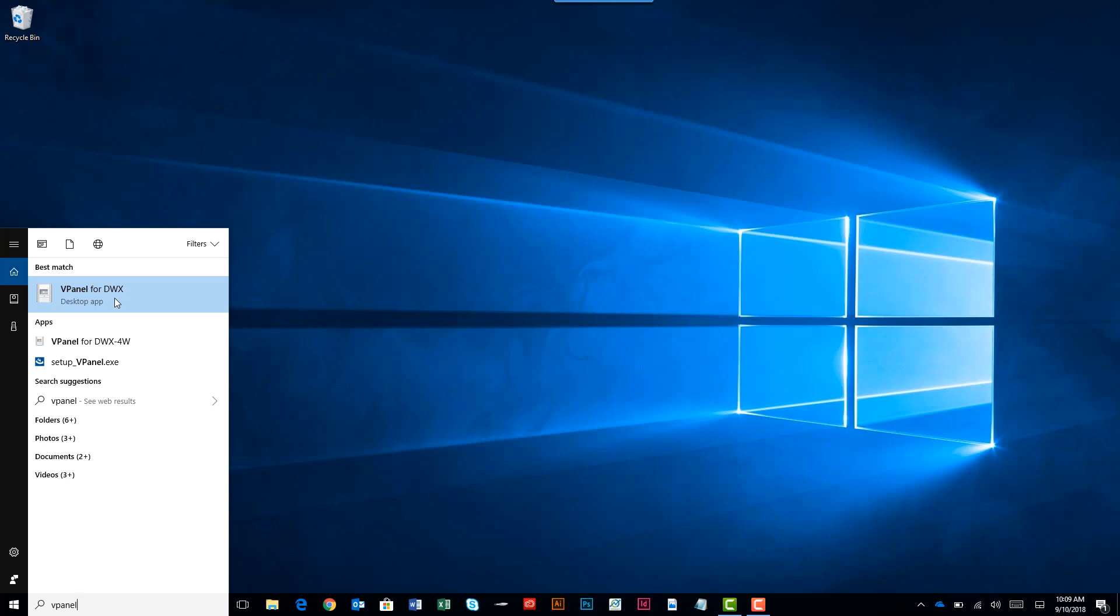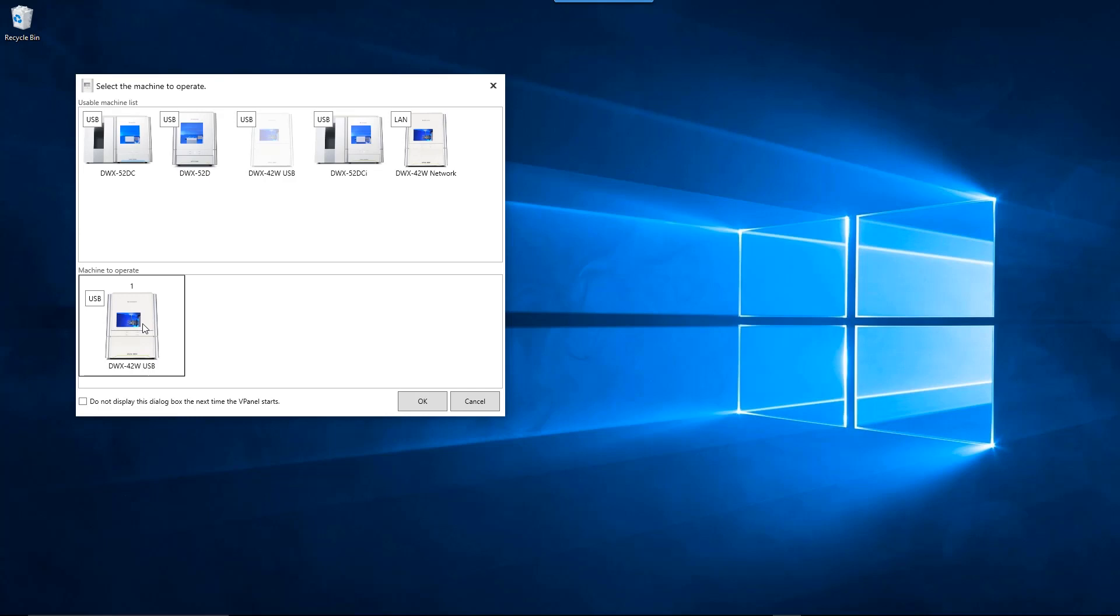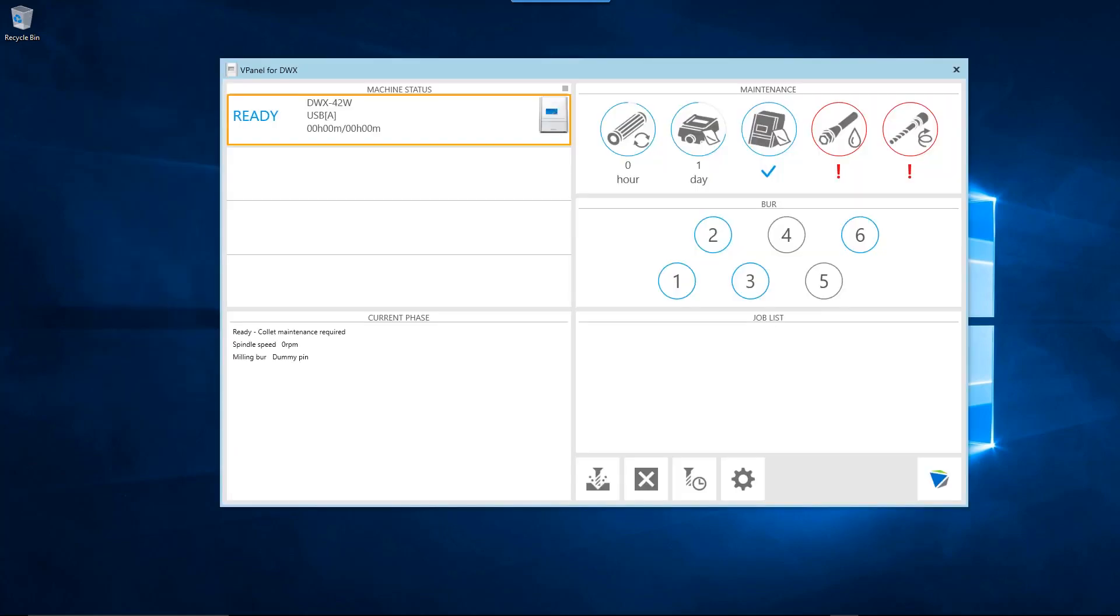Open vPanel on your computer. When the machine selection screen appears, select the DWX-42W and click the OK button. Once the vPanel home screen appears, click on the Settings button.